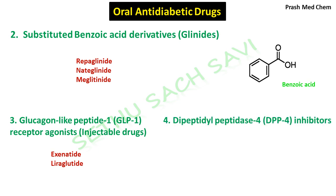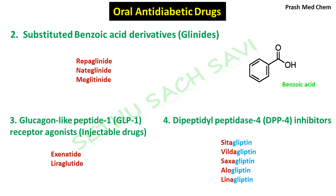The fourth class of drugs in insulin secretagogues is DPP-4 inhibitors — dipeptidyl peptidase-4 inhibitors. The names of drugs in this class end with 'gliptin,' and examples are sitagliptin, vildagliptin, saxagliptin, alogliptin, and linagliptin.